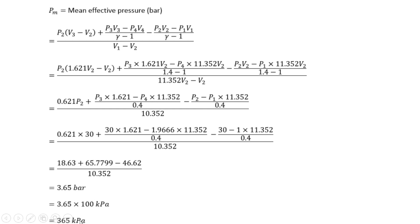So in this way we can use the Excel calculator and have seen the analysis of the diesel cycle — calculating compression ratio, percentage clearance, cutoff ratio, heat supplied, heat rejected, efficiency, and mean effective pressure. Thank you very much for watching. If you want the Excel calculator, you can email me at the given email address.